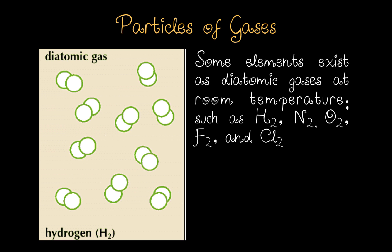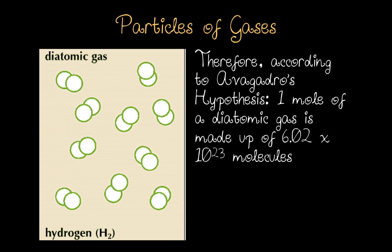Now some elements exist as diatomic gases at room temperature, such as hydrogen, nitrogen, oxygen, fluorine, and chlorine — diatomic gases. Therefore, according to Avogadro's hypothesis, 1 mole of a diatomic gas is made up of 6.02 × 10²³ molecules. A particle of gas can be an atom or a molecule.